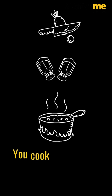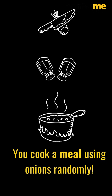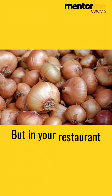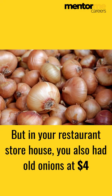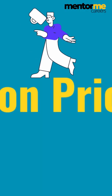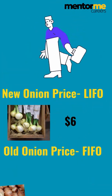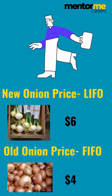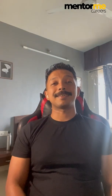But when you go back and start preparing your meal, you sell it off, and later when you're accounting for the profit, you're basically confused as to which rate to take — because you also had old onions at $4. So if you used $6, the recent price, it's called LIFO, and if you used the older price, it's called FIFO.